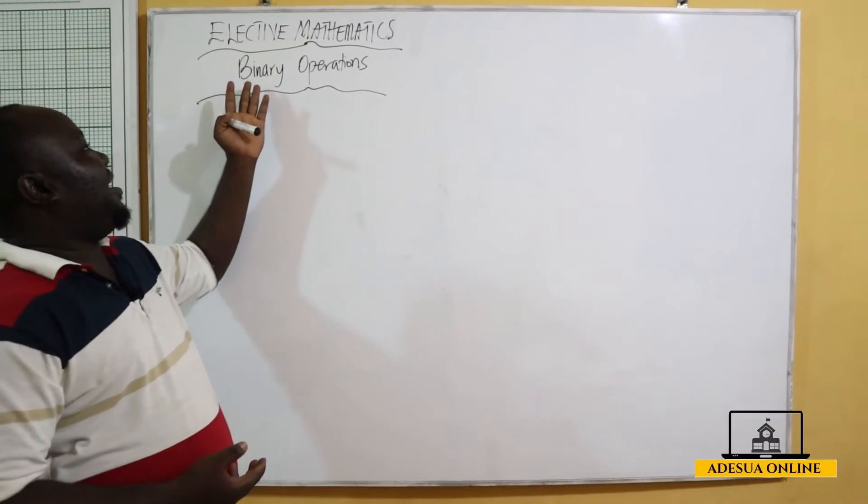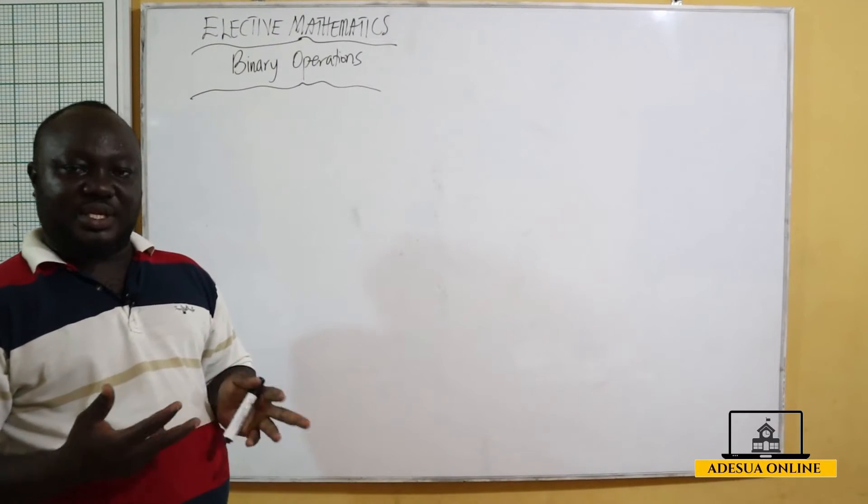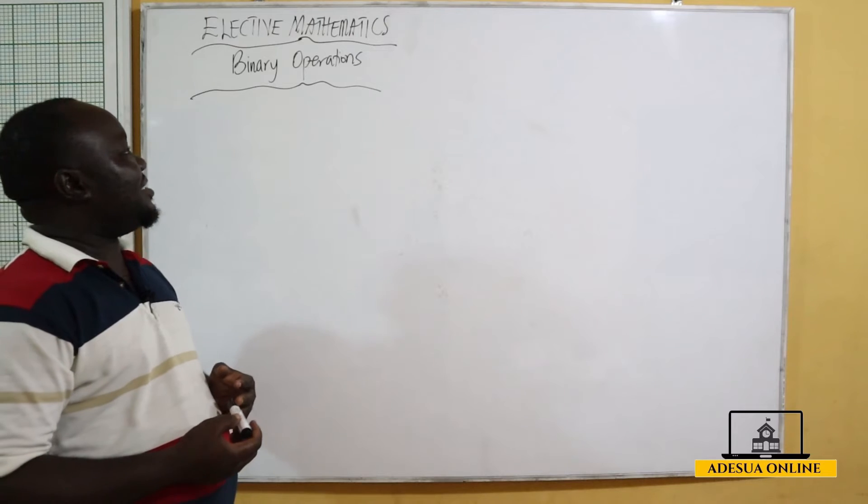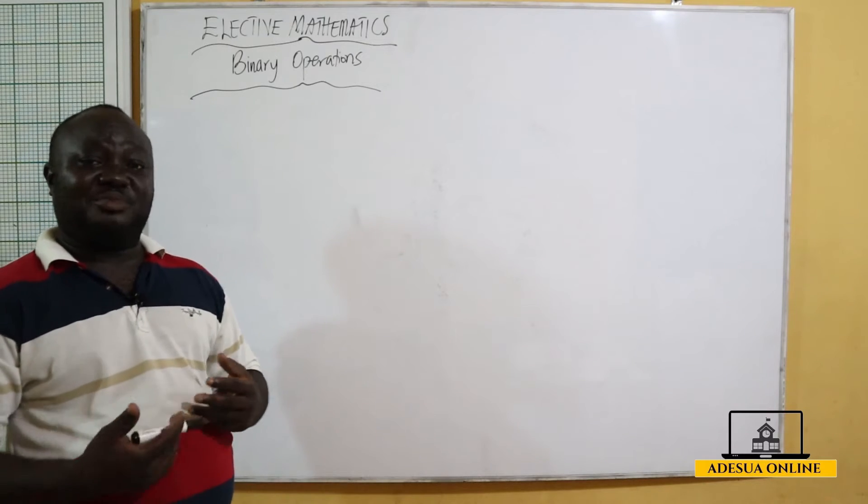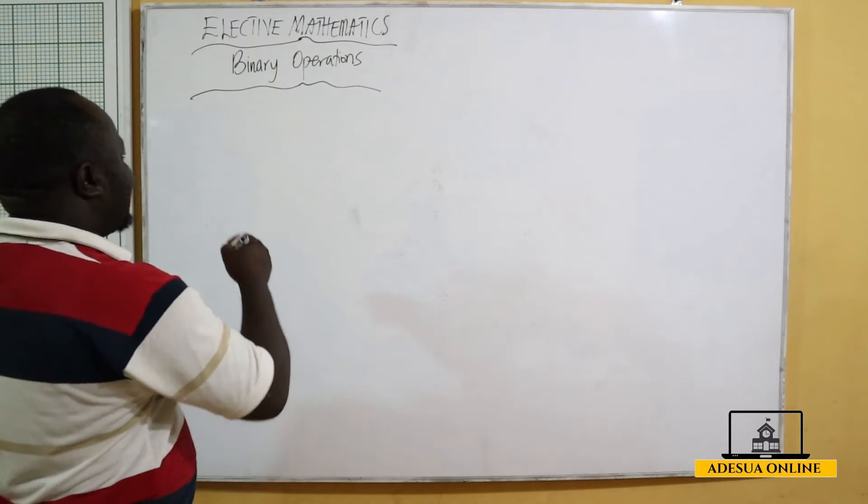When we say binary, binary means we have the two, let's say comparing two things. The operations we are talking about are addition, subtraction, multiplication, and division. Binary operations usually stand for two terms.